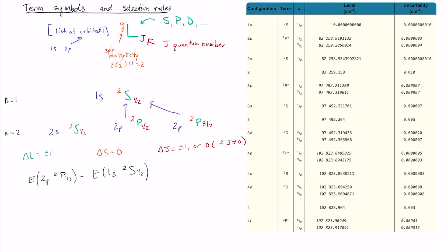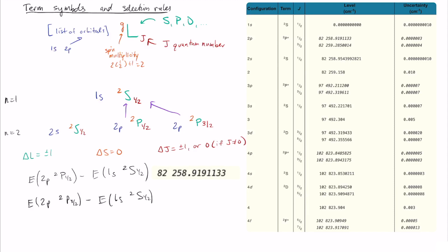To find the transition energy, you take the energy for the doublet P one-half state and subtract the energy for the doublet S one-half state, giving you the first transition. Similarly, the energy for the doublet P three-halves minus the doublet S one-half gives the second transition. With that, we now know just about everything we need to construct all hydrogen spectra. The only remaining complication is what to do about a magnetic field and how the splitting works, which we will talk about in the next video.